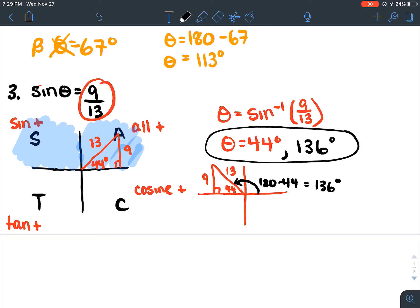So now I know that theta could be 44 or 136 degrees. Those are my two possible angles between 0 and 360 degrees. That's all that's possible, because the sine ratio would be negative down in quadrant three and four. So it would be like negative 9 over 13. And there's like an infinite number of answers here, but between 0 and 360 degrees, there's only two answers.